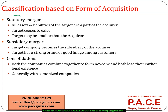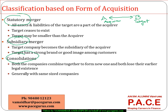Based on the form of acquisition, we classify mergers into three categories: a statutory merger, a subsidiary merger, and a consolidation. Let's say A and B have entered into a statutory merger, where A is the acquirer and B is the target. What generally happens is B will stop existing as a legal entity. All the assets and liabilities of B are transferred to A, and A will continue to exist as it is.